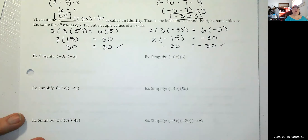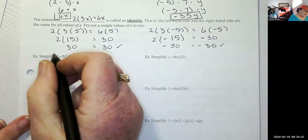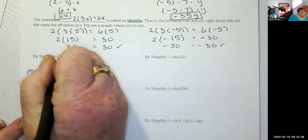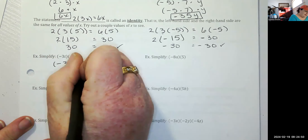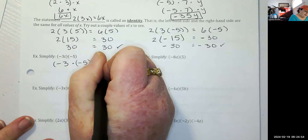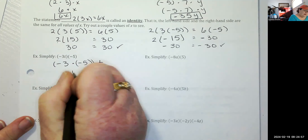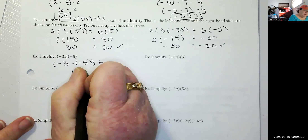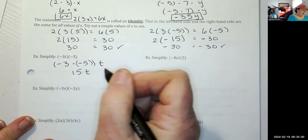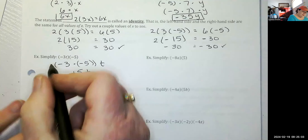Simplify: negative three T times negative five. I can take this and go negative three times negative five, then times T. Three times five is 15, the signs are the same so it's positive, and I just bring down the T. That gives 15T.